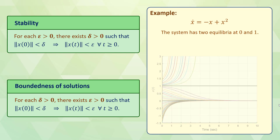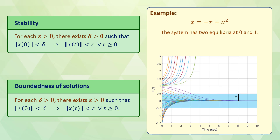Using MATLAB, we plot the solutions to this system for different initial conditions from -1.5 to 1.5. We see that when the system starts from initial conditions at 0 and 1, the solutions remain constant, because 0 and 1 are the equilibria. We choose an epsilon and see that for this particular epsilon, delta can be chosen as delta equals epsilon, and the system is stable.